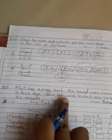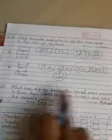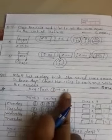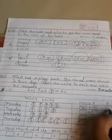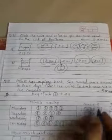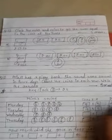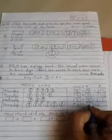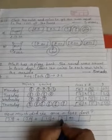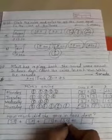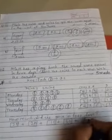Minty has a piggy bank. She saved some amount over four days. Count the coins in each row and write the answer. Each coin is worth five rupees. Monday: five coins, five times five equals twenty-five rupees. Tuesday: four coins equals twenty rupees. Wednesday: three coins equals fifteen rupees. Thursday: six coins equals thirty rupees. Total: twenty-five plus twenty plus fifteen plus thirty equals ninety rupees.